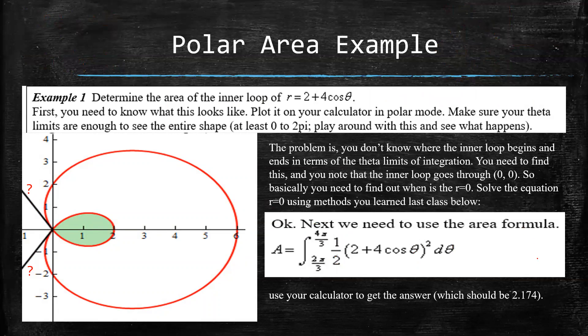And once you do that, you should end up with 2.174. And if you did not get that, make sure that you were in radian mode. So radian mode is very important. And that's the only mode that we ever use in this class.